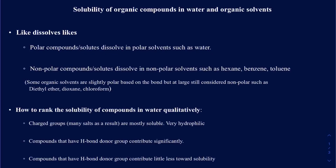The theory behind dissolving a compound in a given solvent goes back to Gen Chem: like dissolves like. If you have a polar compound, it will dissolve in polar solvents such as water — and some other polar solvents are methanol and ethanol — but obviously water is the most common polar solvent. And if you have a non-polar compound, they will dissolve in non-polar solvents such as hexane, benzene, and toluene, which are some of the most common non-polar solvents.